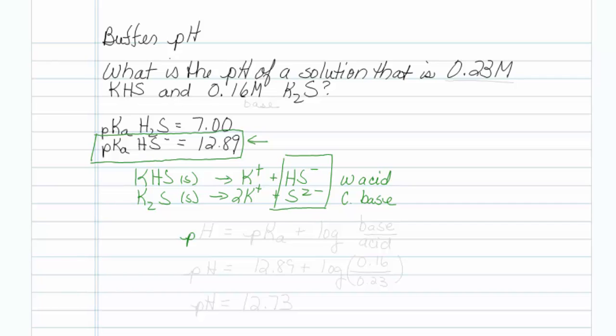Alright, so the Henderson-Hasselbalch equation. The pH is equal to the pKa plus the log of base over acid, and that can be either in concentration or it can be in moles. We have concentration, so we'll work there.